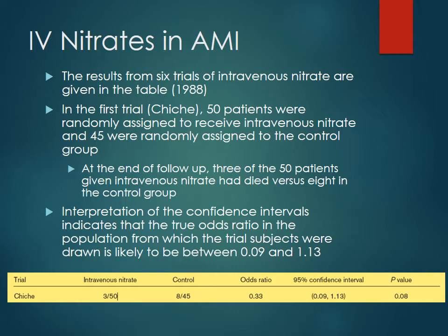This is one of those examples where if the 95% confidence interval crosses one — because the baseline odds is one in the control group — you can see that the odds ratio is 0.33, meaning you're about a third as likely to have a death occur if you receive intravenous nitrates. Looking at the 95% confidence interval, it ranges anywhere between 0.09 and 1.13. Because it crosses one, we immediately know that these results are not statistically significant, even though it looks like you have a pretty good reduction in the odds of death. The p-value is backing that up by being 0.08, and 0.05 is going to be our standard alpha level to achieve significance.